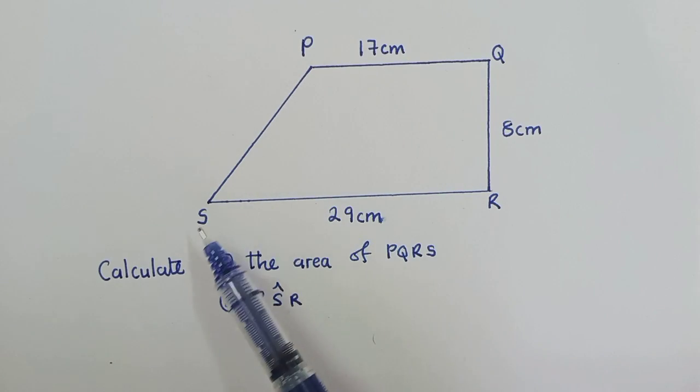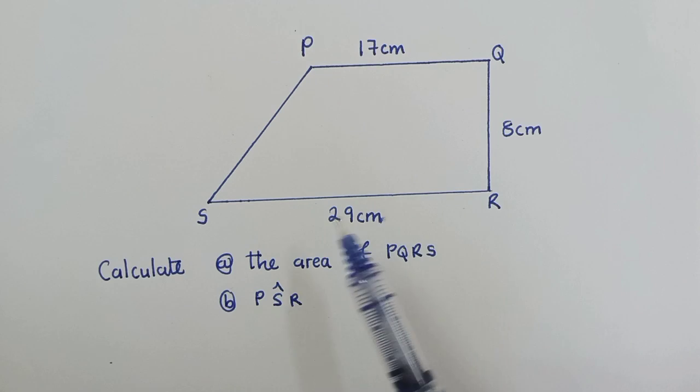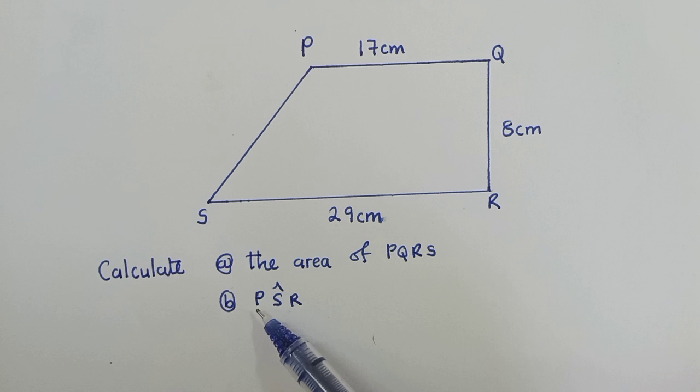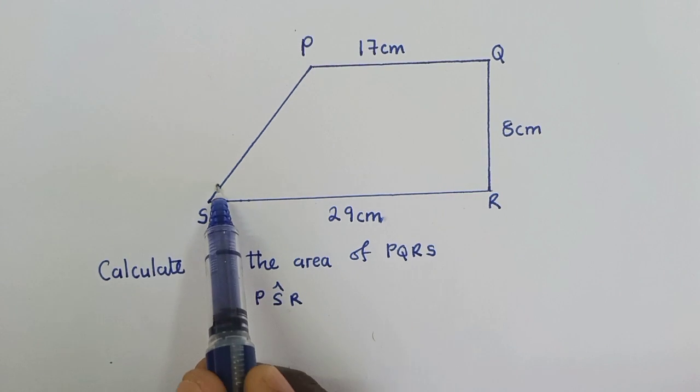P is here, S, R, Q over there. So we need to calculate the area of this. The next question, we need to calculate the angle P, S, R, which is right here.